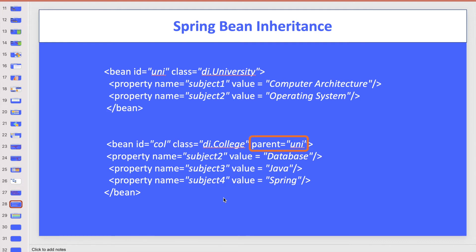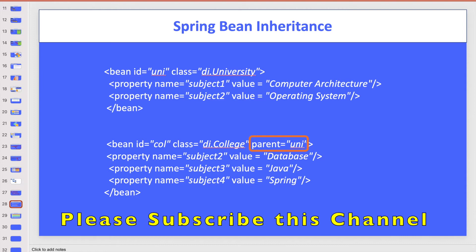Let's discuss what Spring bean inheritance is and how it is different from Java inheritance. In Spring, a bean contains a lot of information — constructors, properties, methods, and so on. If a bean wants to inherit another bean's properties, we can use Spring bean inheritance. Using it, you can define a parent bean definition as a template, and child beans can inherit the required configuration from the parent bean.